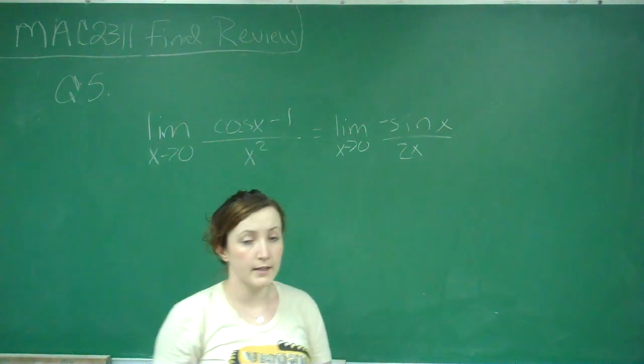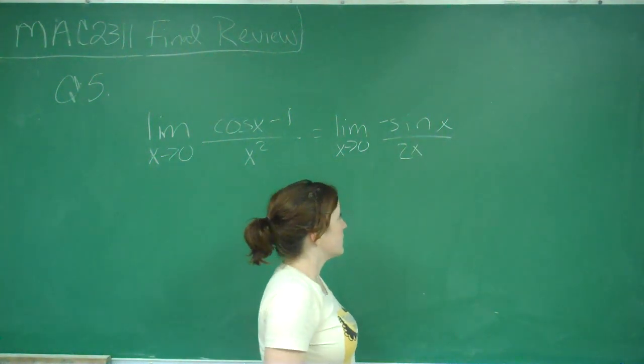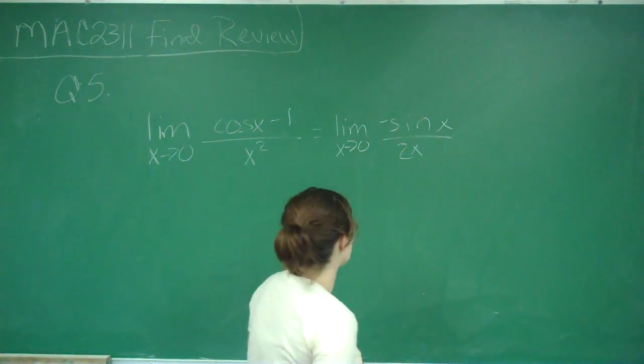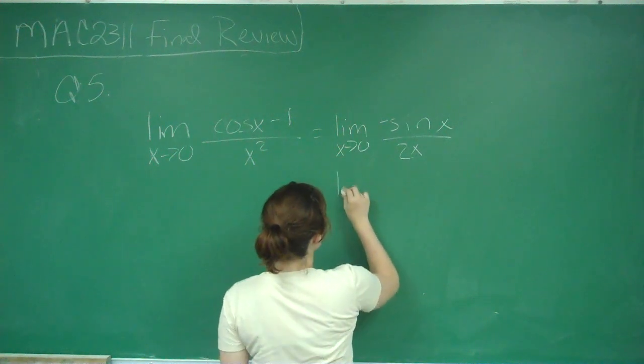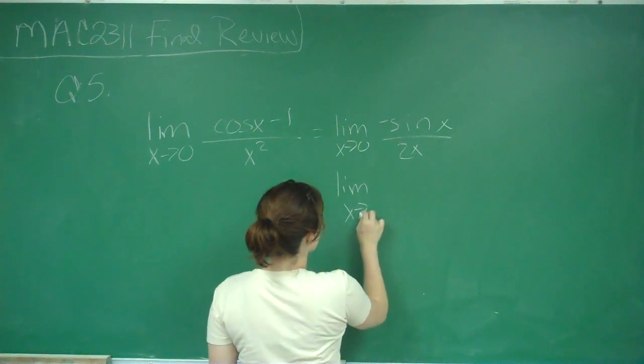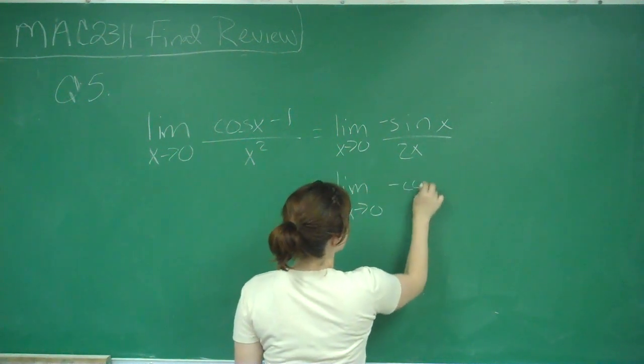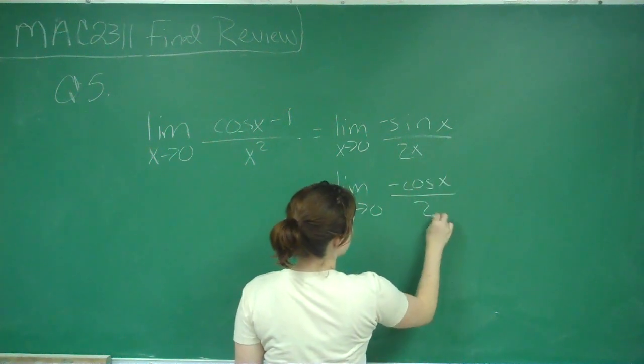Plug in zero again and I get zero over zero once more, so I need to do L'Hôpital's rule again. I can keep doing L'Hôpital's rule as long as I keep getting an indeterminate form. So that would be negative cosine x over 2.